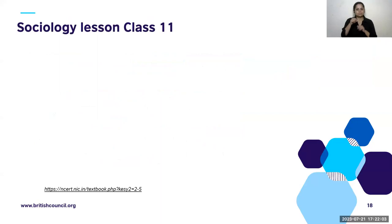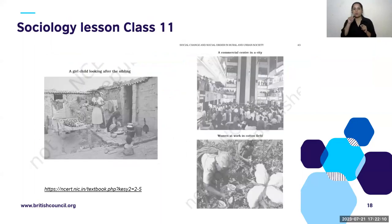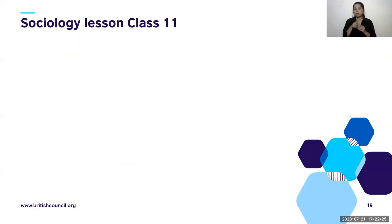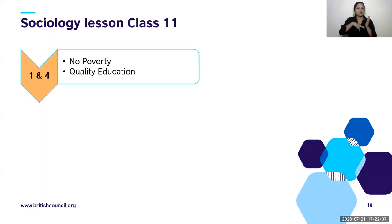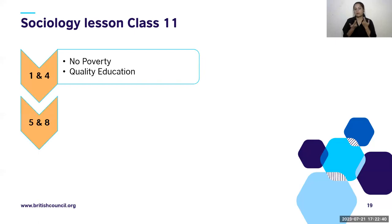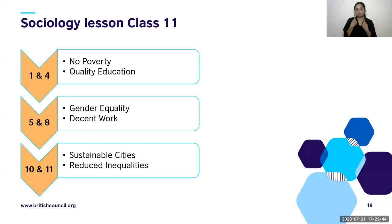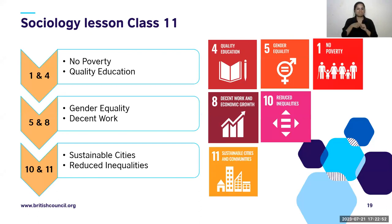Moving up the ladder to Class 11: there are three images — a girl child looking after her sibling, a commercial center or mall, and women at work in a cotton field. The chapter has only two content questions at the end, but there are many possibilities for SDGs: No Poverty, Quality Education, Gender Equality, Decent Work, Sustainable Cities, and Reduced Inequalities — a lot of scope for SDG integration here.